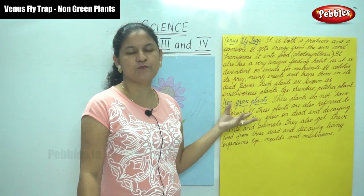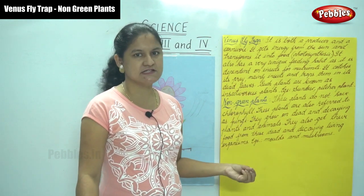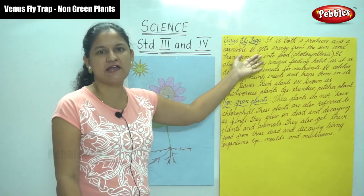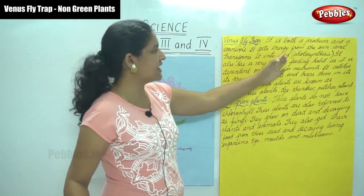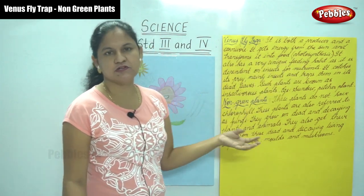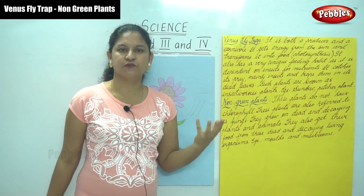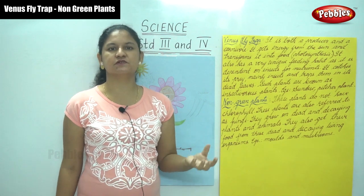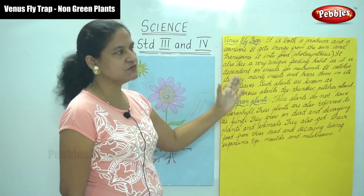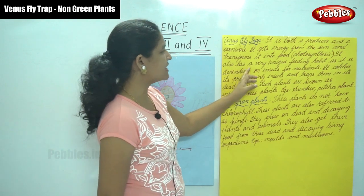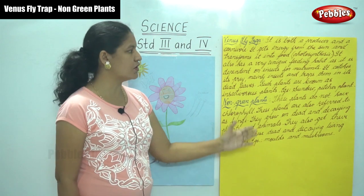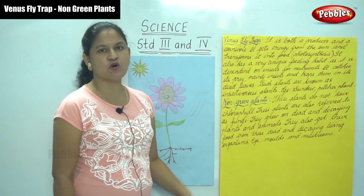The Venus flytrap is called a carnivore because it eats other insects — that is why it is named the Venus flytrap. It gets energy from the sun and transforms it into food, following the process of photosynthesis. It also has a very unique feeding habit, as it is dependent on insects for nutrients.